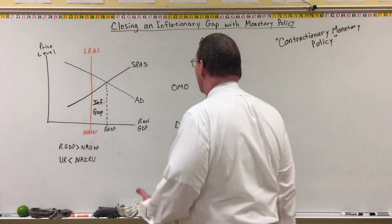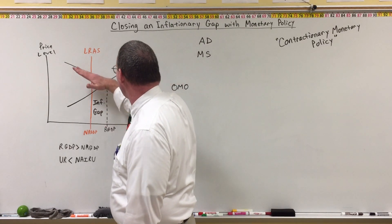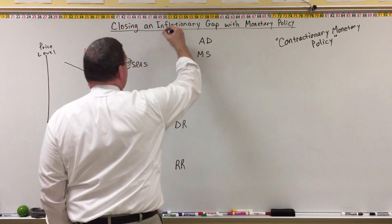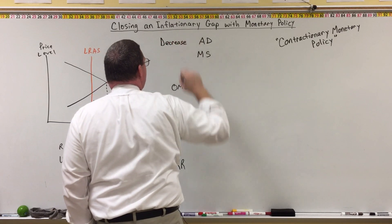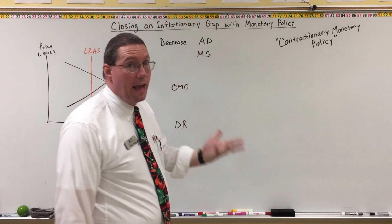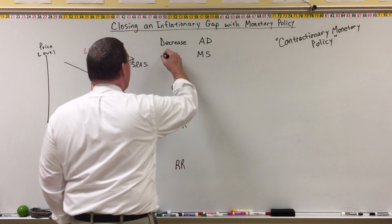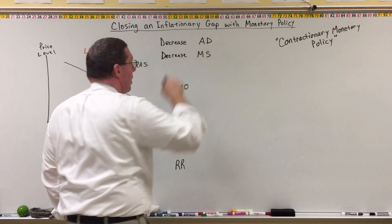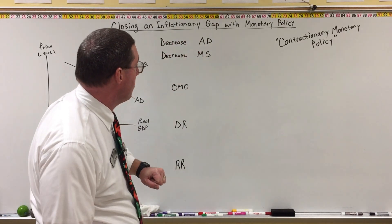The Fed knows that the way to pull back on the economy is to pull back on aggregate demand — we need to decrease aggregate demand. As we saw in a previous lesson, the way that the Fed can decrease aggregate demand is if they decrease the money supply. So we need a decrease in aggregate demand by decreasing the money supply. The Fed has three tools at its disposal.